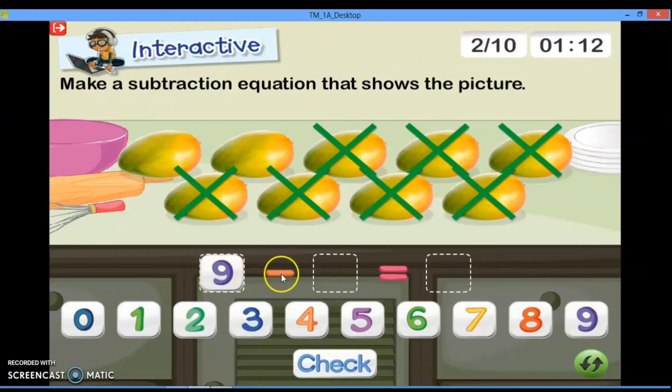Nah, dikurangi dengan mangga-mangga yang diberi tanda silang. Kita hitung lagi. One, two, three, four, five, six, and seven. Ya, seven kita taruh di sini. Jadi, nine minus seven equals.